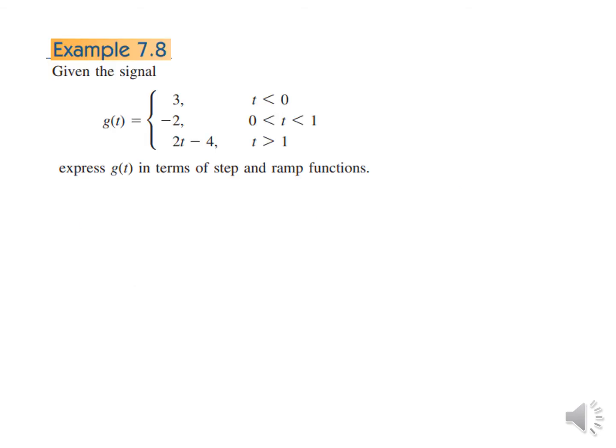We now go straight to example 7.8. G(t) is given with specific values over defined time intervals, and we have to express this in terms of step function and ramp function.